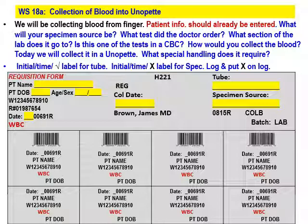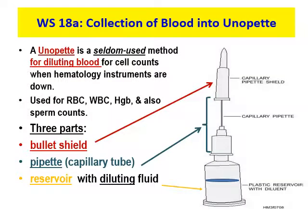Always remember, you note your specimen source and anything else you find out about your patient — if they are or are not fasting, if they're on any kind of medication. Because if they're on some kind of anticoagulation therapy, they may take longer to stop bleeding than a normal patient, and we always want to keep an eye on that.